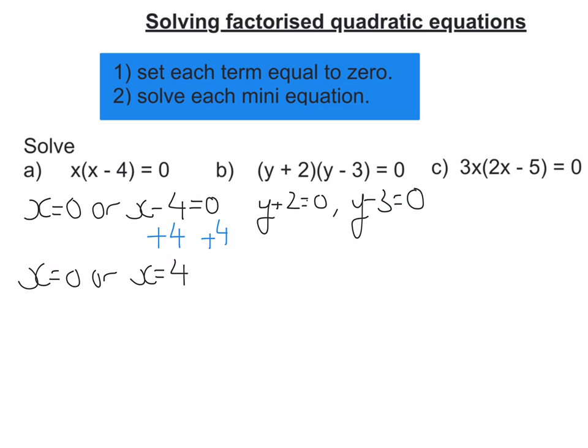Solve each mini equation. So take away two to both sides from this one. Add three to both sides for this one. So let's do that. And we're going to get y equals negative 2 and y equals positive 3. They are the answers to that one.